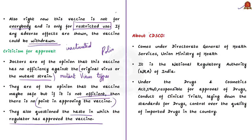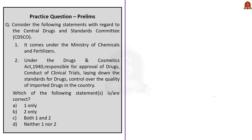Now let us see about the Central Drugs and Standards Control Organisation or CDSCO. It comes under the Directorate General of Health Services under the Union Ministry of Health and is the National Regulatory Authority of India. Under the Drugs and Cosmetics Act of 1940, the CDSCO is responsible for the approval of drugs, the conduct of clinical trials, laying down the standards for drugs, and control over the quality of imported drugs in the country. With this, we have come to the end of this news analysis.